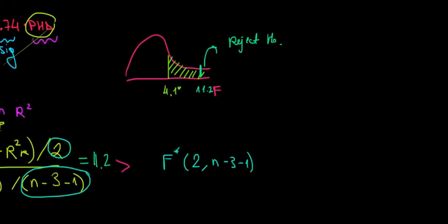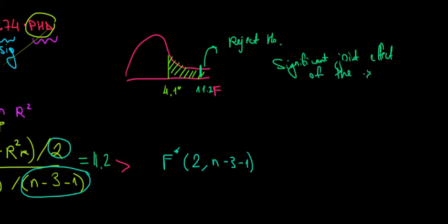So there is a significant joint effect of education level on wages. This is the same as saying that the R-squared increased significantly, or that adding the dummies helps explain the model better. They are all the same conclusion, and it's always wise to understand conclusions from different angles because it is the same thing.